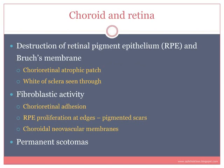Changes in the choroid and retina are seen in posterior and pan uveitis. Destruction of retinal pigment epithelium and Bruch's membrane due to inflammation results in a chorioretinal atrophic patch. The atrophy results in the white of the sclera being seen through in these areas, appearing as a whitish area in the fundus. Fibroblastic activity causes chorioretinal adhesion at the edges, and the retinal pigment epithelium at the edges proliferates, resulting in pigmented scars. Choroidal neovascular membranes can also develop in these areas and have a tendency to bleed.